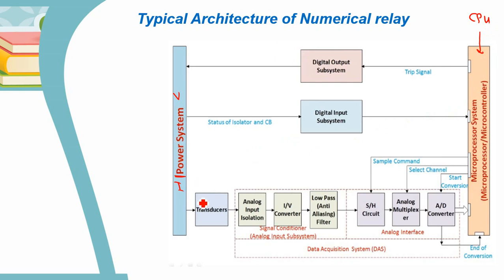First we have the transducers. The high voltage and high current of the power system are stepped down by using transducers — such as CT (current transformer) or voltage transformers. Then we have two main categories of the numerical relay: the analog input subsystem, which is a signal conditioner, and the analog interface with the CPU. All of these are called the data acquisition system.